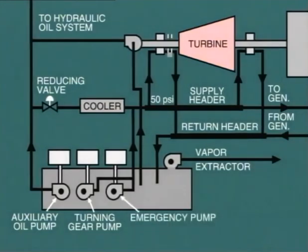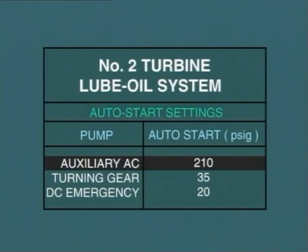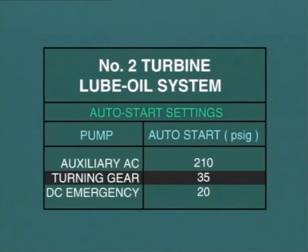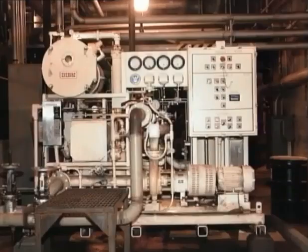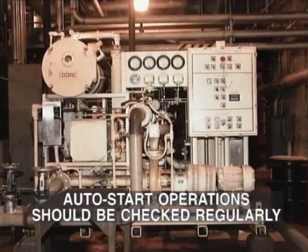There is also a DC emergency pump which will provide lubrication in the case that all AC service supply power is lost. So we can see that there is, in fact, a hierarchy of oil pumps with automatic start-up based on pressure readings. If the high-pressure oil pump fails and the pressure falls, the AC auxiliary oil pump will cut in automatically. If the lube oil pressure falls, the turning gear oil pump starts up automatically, and if this consequently fails, the DC oil pump will start. The pump auto-start operations should be checked on all pumps regularly.